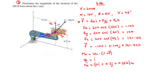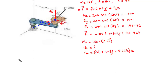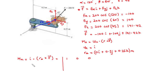Since we have all three values, we can find the moment about the x-axis. The moment about the x-axis equals i dot (r_a cross F), which is the three-by-three determinant. On the first row we have 1, 0, 0 for u_x. On the second row we have r_a coefficients: 0, 0.3, 0.25. On the third row we have the F coefficients: negative 100, 100, and 141.42.